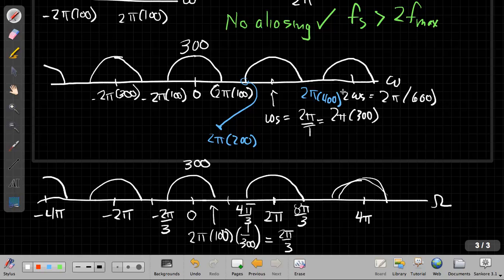But this shows you again, through the three steps of sampling, that I put copies every omega_s, that's 2 pi over T, I scale the height by 1 over T, and then I relabel the frequency axis to go from little omega to big omega, that is from continuous time radian frequency to discrete time radian frequency. I multiply by T, and I get this version of the periodic spectrum. So there's your sampling steps and what goes on in the frequency domain when we sample. All right, good luck.